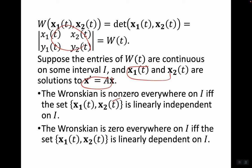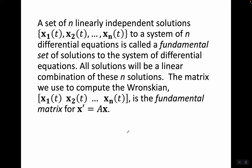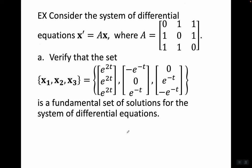In other words, if x1 and x2 are solutions to the system of differential equations, then the Wronskian is either nonzero everywhere or zero everywhere — it's all or nothing. A set of n linearly independent solutions x1(t), x2(t), ..., xn(t) to a system of n differential equations is called a fundamental set of solutions. All solutions will be a linear combination of these n solutions. The matrix used to compute the Wronskian is called the fundamental matrix for x' = Ax.